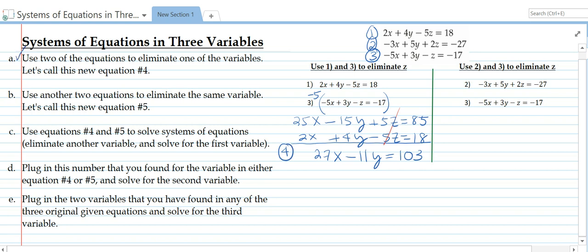Now we're going to use two other equations to eliminate z as well. So I am going to multiply equation number 3 by 2. This way the coefficients of z will be positive 2 and negative 2 and they will eliminate when we add them. So we get negative 10x plus 6y minus 2z equals negative 34. We're going to repeat equation number 2 down here. Negative 3x plus 5y plus 2z equals negative 27.